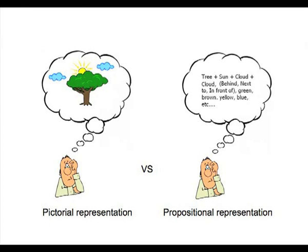On the other hand, we have the propositional account that would say no, there is no such thing as mental images. All our representation in the brain is propositional, and pictures and language would in that case be similar. So the picture shown in this slide with the tree and the sun would, in the propositional case, be represented with objects — tree, sun, cloud — and their relations: behind, next to, in front of, and all the properties like green, brown, yellow, and so on. Very much like language or, for instance, a computer language.